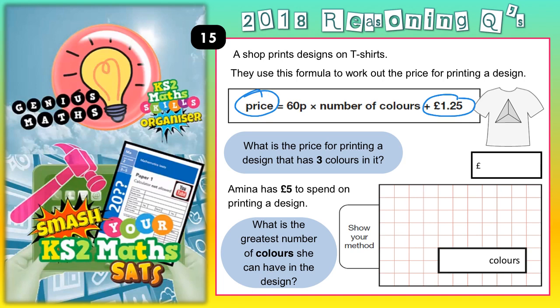What is the price for printing a design that's got three colours in it? Well, that's going to be 60p times 3, add on the £1.25. So let's work that out. 60p times 3: 3 nothings are nothing, 3 60s are 18. So that's £1.80, and then we need to add on the £1.25.